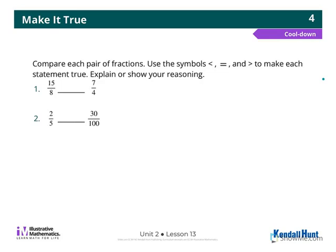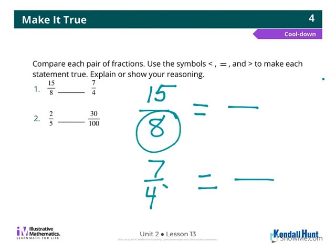So, let's start with number 1. We have 15 eighths and 7 fourths. My strategy is to make equivalent fractions. So, I'm going to look at my denominators, and I'm going to think of a number that 8 and 4 go into evenly. And it would be 8.